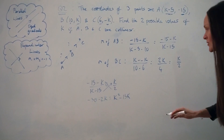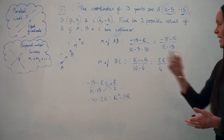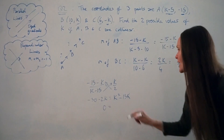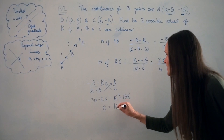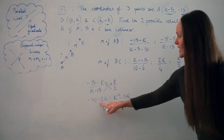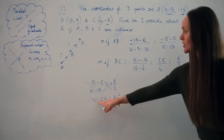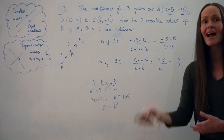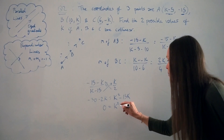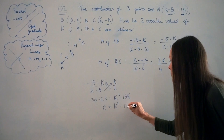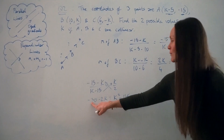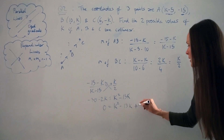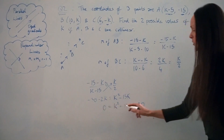I'm going to move everything to the right-hand side because I'm solving a quadratic and I want it to equal zero. I have K squared. Moving the −2K over gives +2K, so −15K plus 2K gives −13K. Moving −30 over gives +30. So the quadratic equation is K² − 13K + 30 = 0.